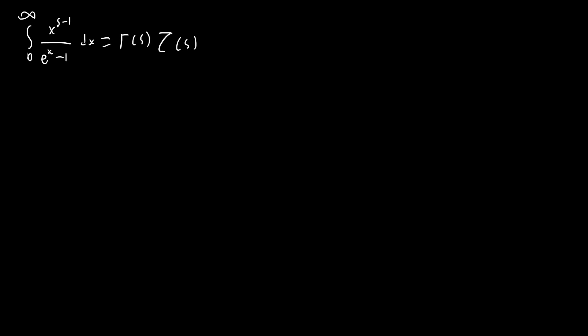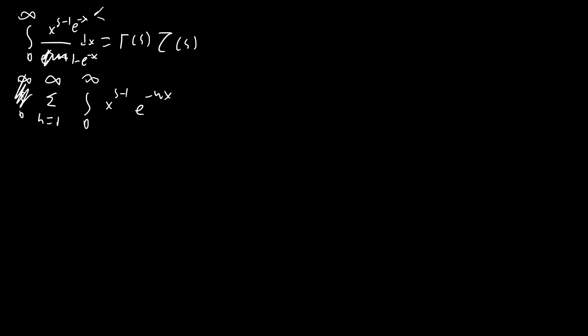The second method is a little more complicated. We'll be using the Bose integral: the integral from 0 to infinity of x^(s-1) / (e^x - 1) dx, which equals Γ(s)·ζ(s). To see why, we change the denominator to (1 - e^(-x)) multiplied by e^(-x), expand as a power series, and end up with the sum from n=1 to infinity of the integral from 0 to infinity of x^(s-1) e^(-nx) dx. Using Laplace transforms, this gives the sum from n=1 to infinity of Γ(s)/n^s, and factoring out Γ(s) gives Γ(s)·ζ(s).